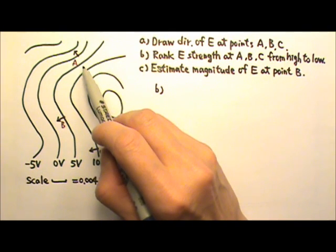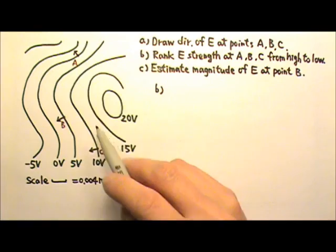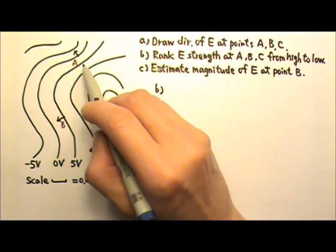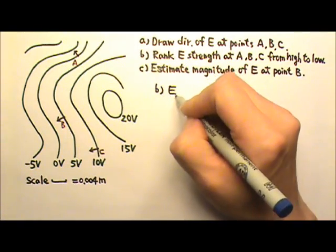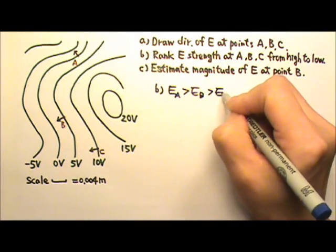These lines are farthest apart, so that means the field is strongest at A, and then B, and then C.